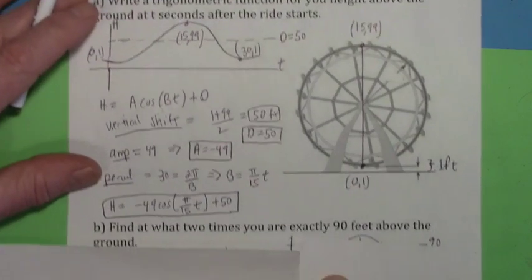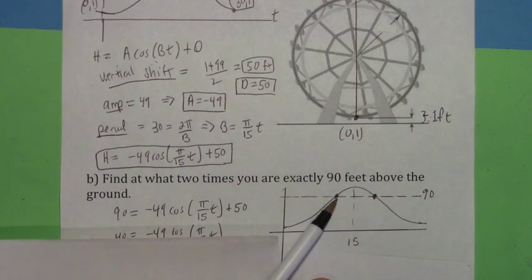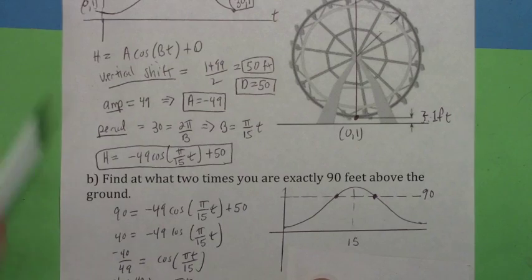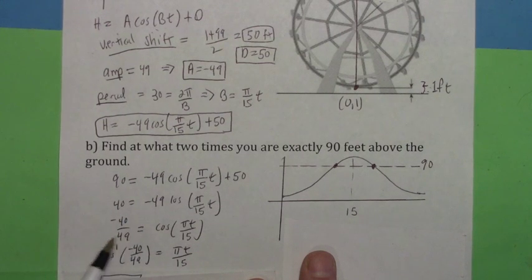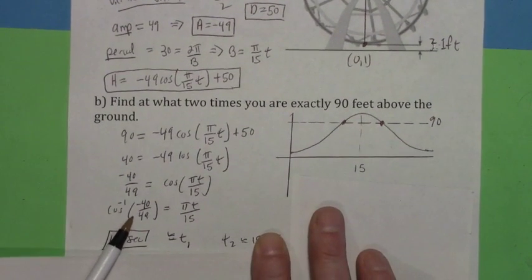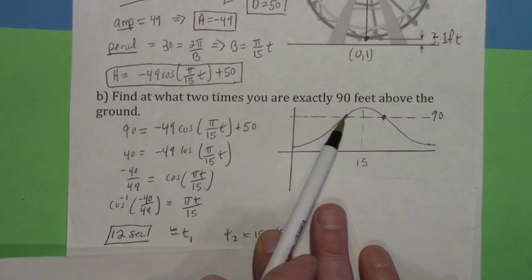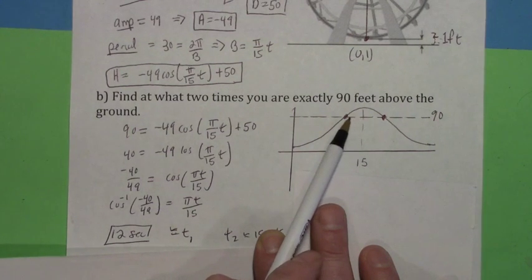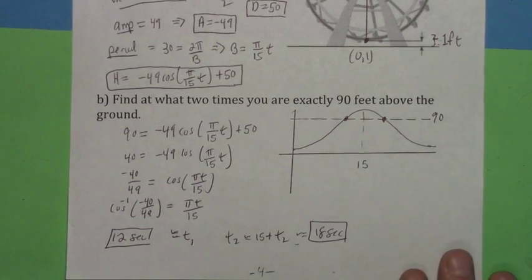The last part asks for the two times you are exactly 90 feet above the ground. Set the equation equal to 90, subtract 50, divide by 49, and take the inverse cosine. This gives a number in the second quadrant because it's negative. Solving for t gives about 12 seconds for the first time. By symmetry, the distance from the top (15 seconds) is 15 minus 12 equals 3 seconds, so the second time is 15 plus 3 equals 18 seconds.